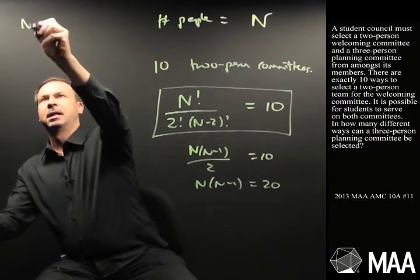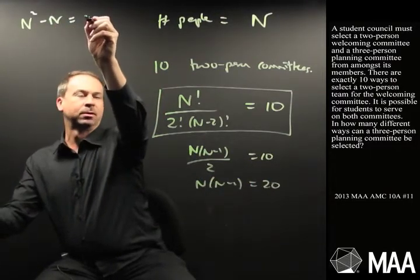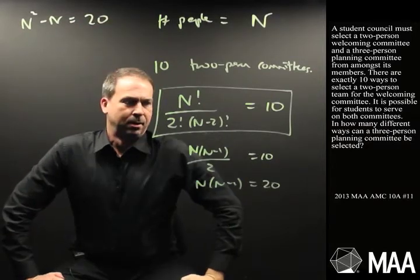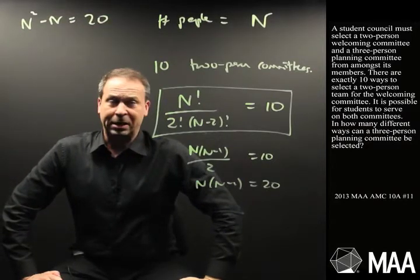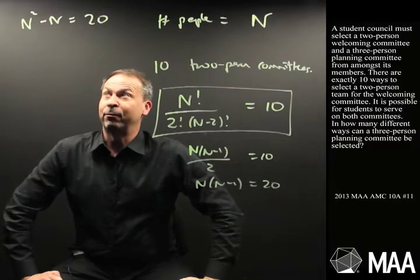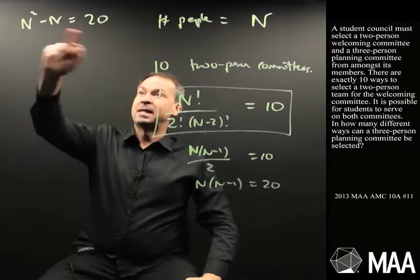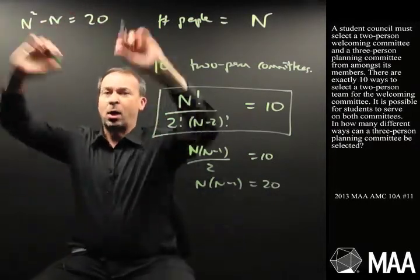Maybe I'll expand a little bit. N squared minus N equals twenty. I'm just following my nose right now. I'm not sure what I'm really doing. I'm just making it look a little bit friendlier. Number squared take away itself is twenty. That's just a quadratic equation.